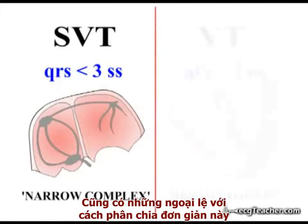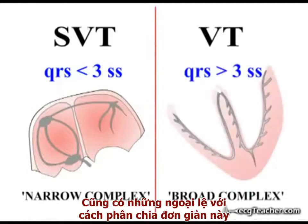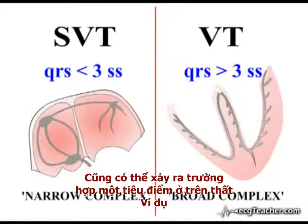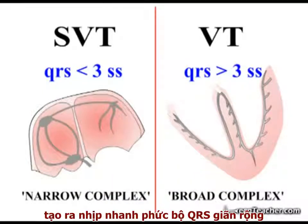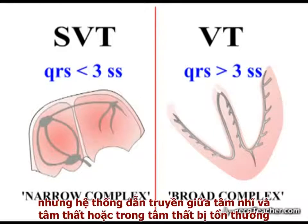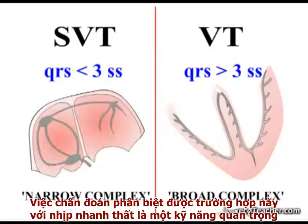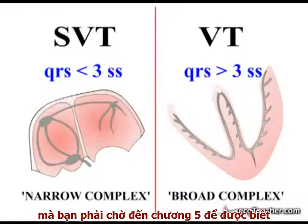There are exceptions to this simple division, however. For example, it is possible for a focus in the supraventricular region to generate a broad complex tachycardia when conduction between the atria and ventricles or within the ventricles themselves is abnormal. Distinguishing this possibility from ventricular tachycardia is an important skill, but this must wait until Section 5.